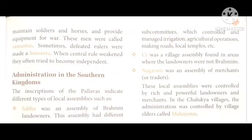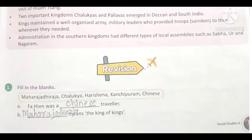Now we will discuss the exercise. Fill in the blanks. First: Fa-Hian was a blank traveler — answer: Chinese traveler. Second: blank means the king of kings — answer: Maharajadhiraj means king of kings.